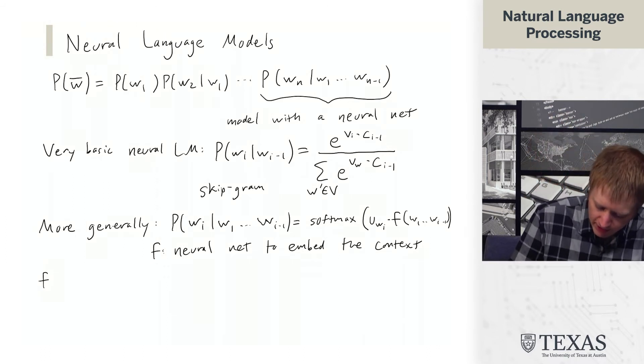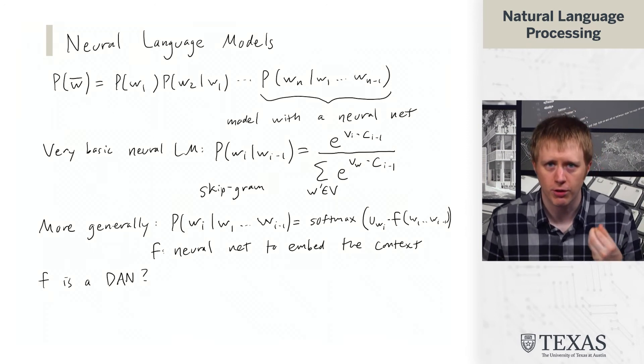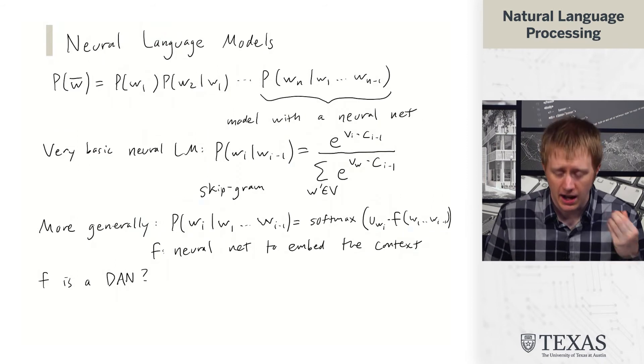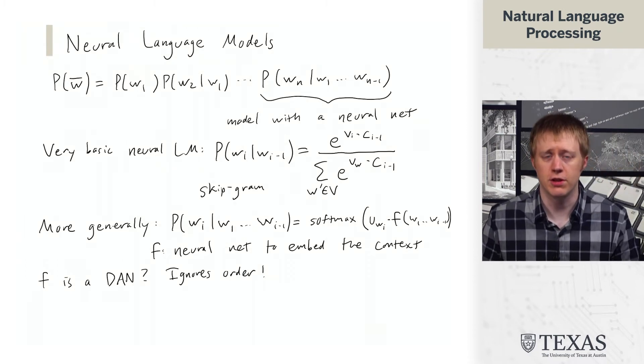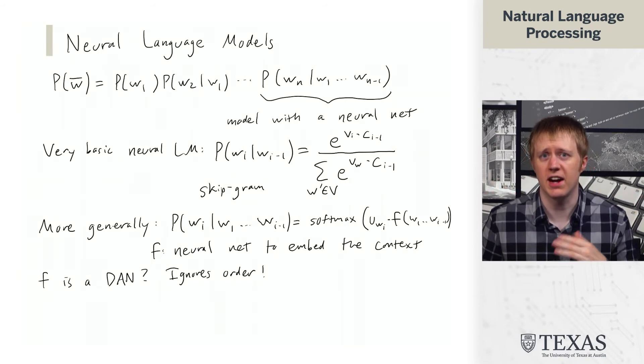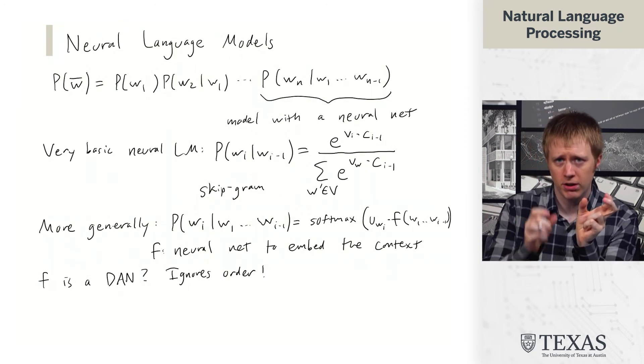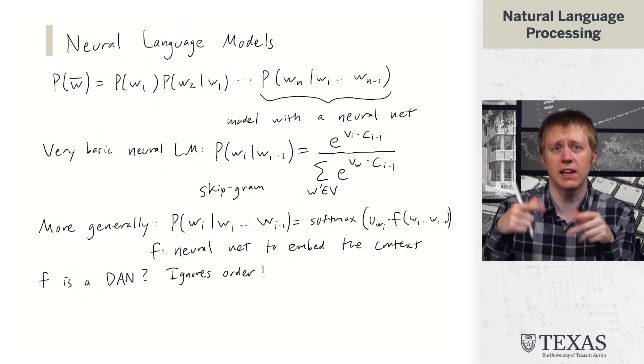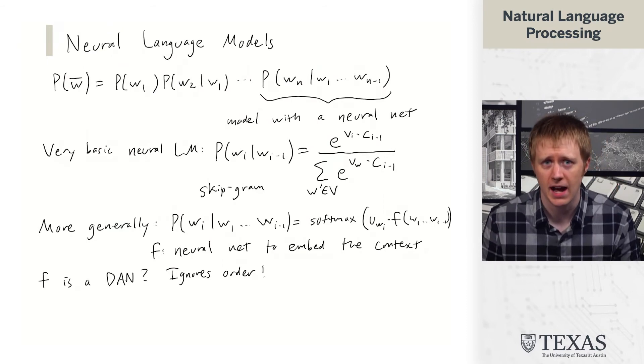So from what we've seen so far, we could have f be something like a deep averaging network. The nice thing about this is deep averaging networks for tasks like sentiment analysis work very well. But the problem is that this ignores the order of the words in the context. It's going to treat WI-1 and W1 the same because it just sums everything together. And so this is not going to do a good job of capturing the idea that probably the word that's immediately before WI has a highly constraining effect on what WI should be. And the word that's 15 positions back has a much less strong effect.